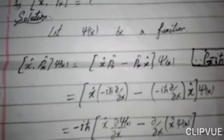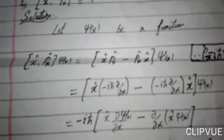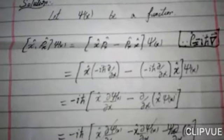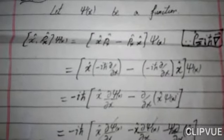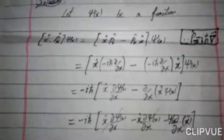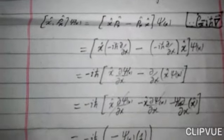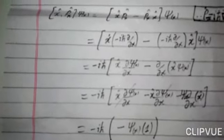The momentum operator is equal to minus iota h-bar del. Here we just take the del component, which is partial over partial x. So minus iota h-bar partial over partial x gives us the linear momentum.